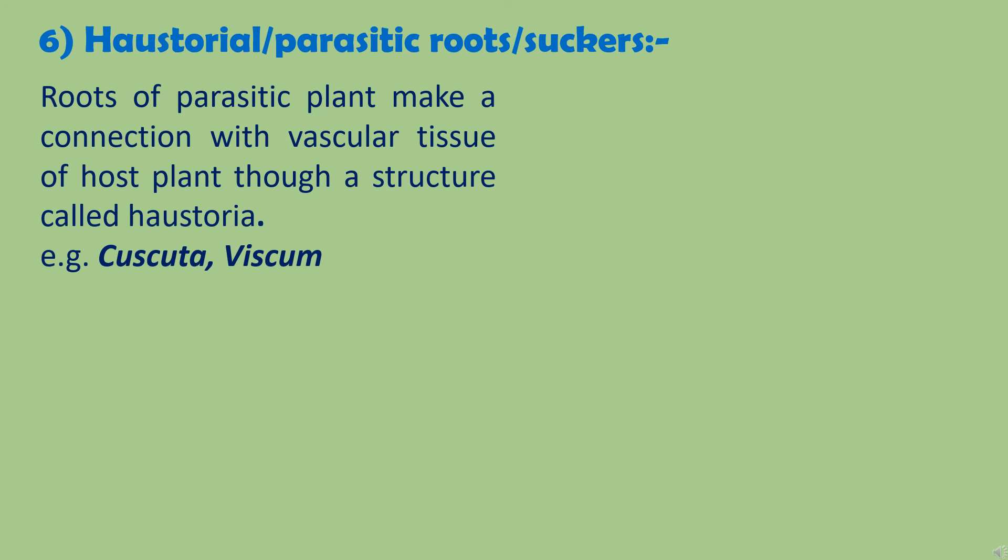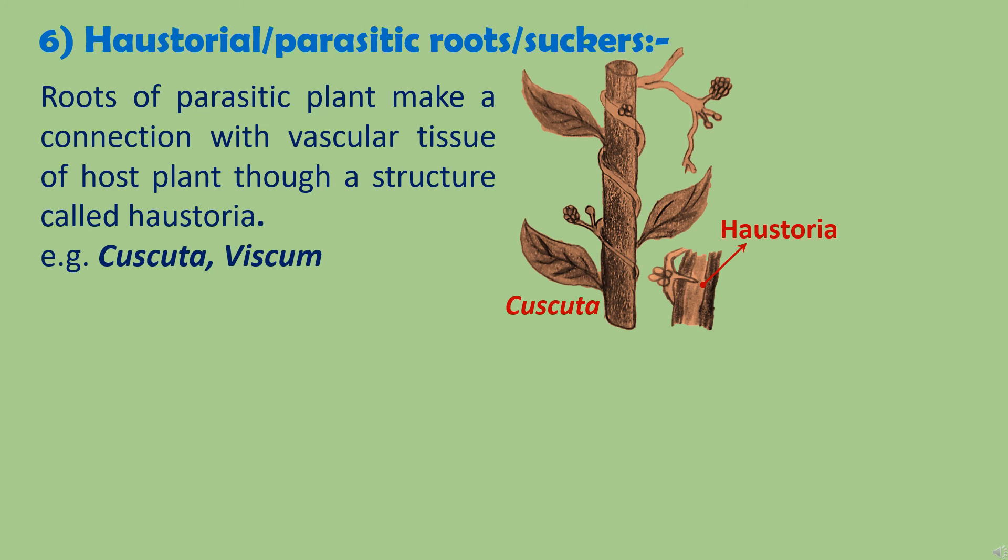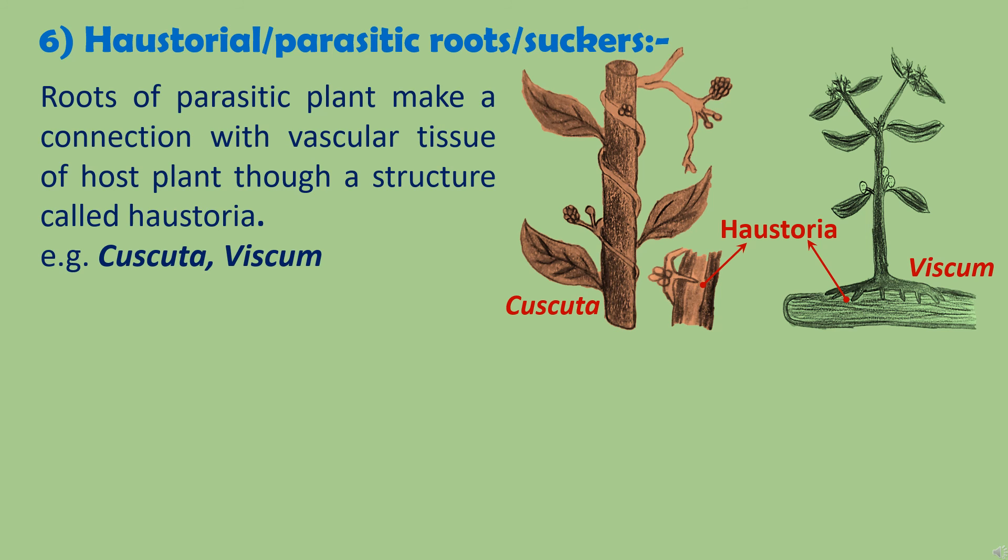Now, haustorial roots. These roots are found in parasitic plants, and are therefore also called parasitic roots. The vascular tissue — that is xylem and phloem — of these roots makes connection with the vascular tissue of the host plant through a structure called haustoria. These haustoria suck water and minerals from the host plant, so they are also called suckers. For example, in Cuscuta, which is a parasitic plant, leaves and stem are non-green. Due to this, it is a heterotrophic plant and completely depends upon the host plant for food and water, making a connection through haustoria. Such roots are also found in Viscum, which is a parasitic plant or semi-parasite — it absorbs water and minerals from the host plant through haustoria, but is capable of synthesizing its own food because it has green leaves.